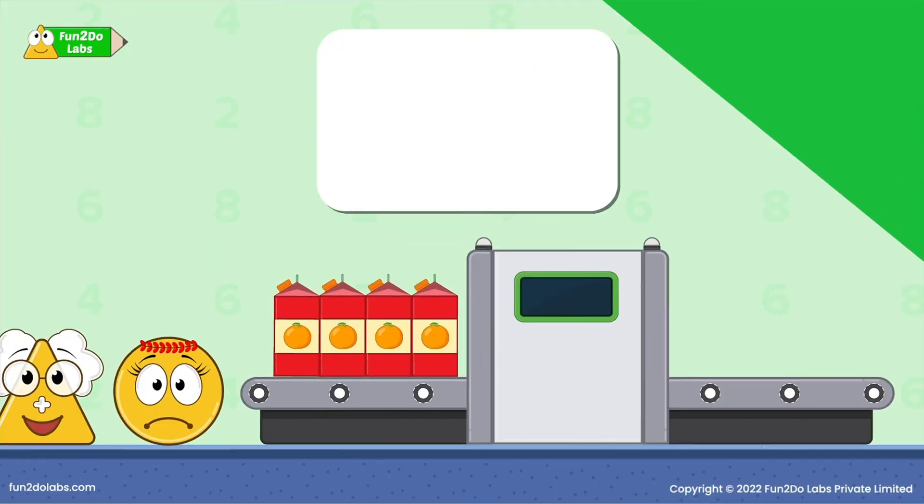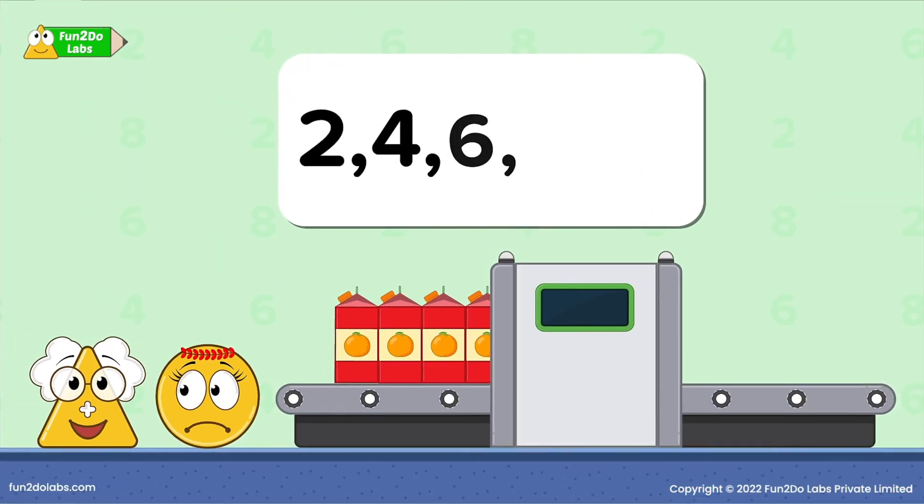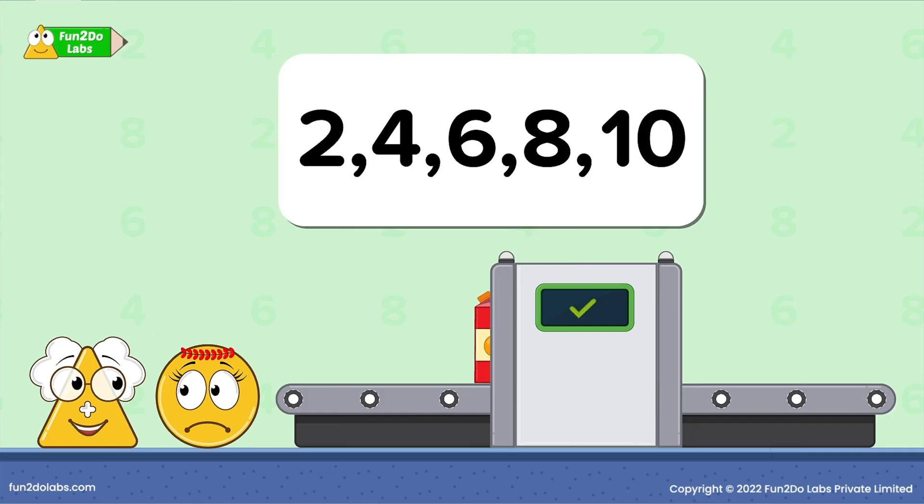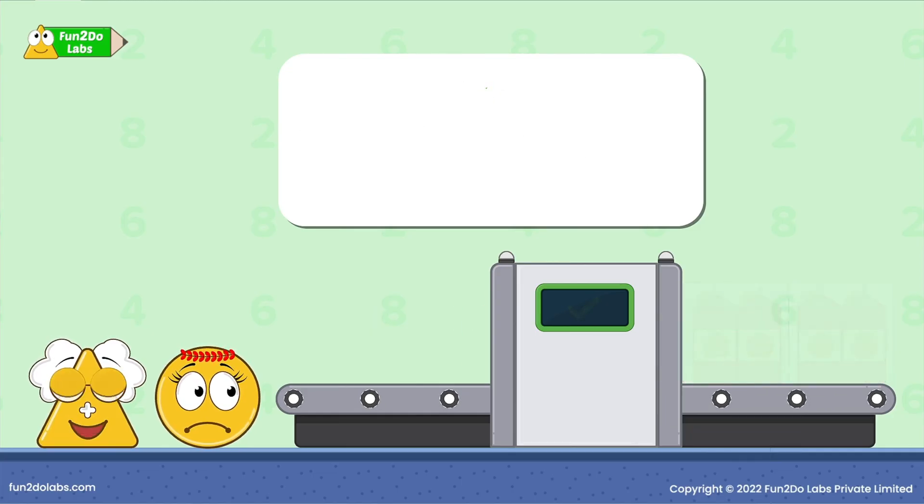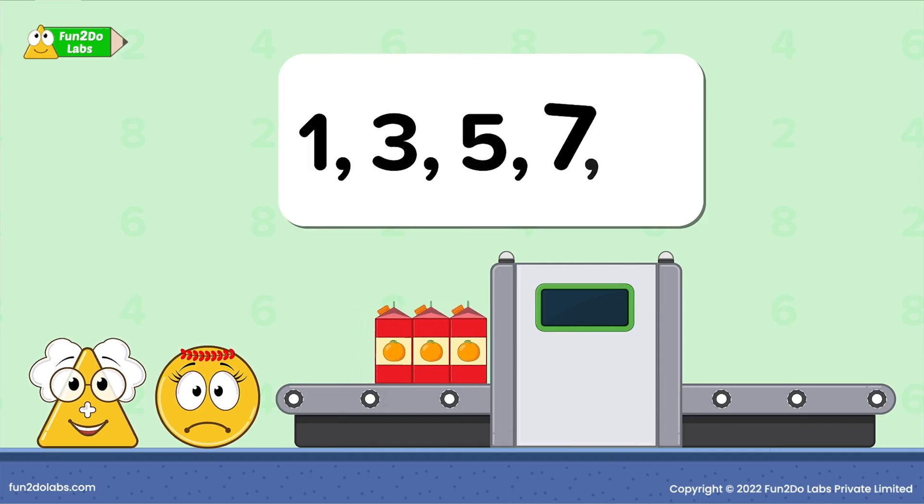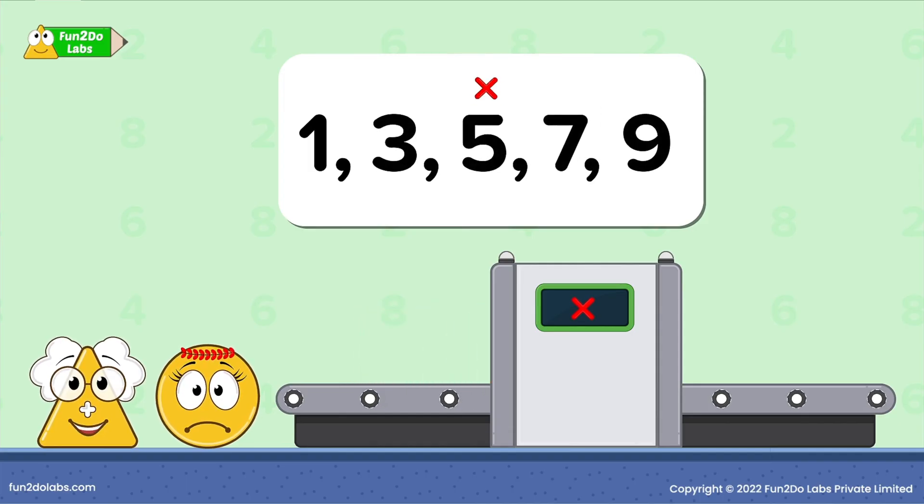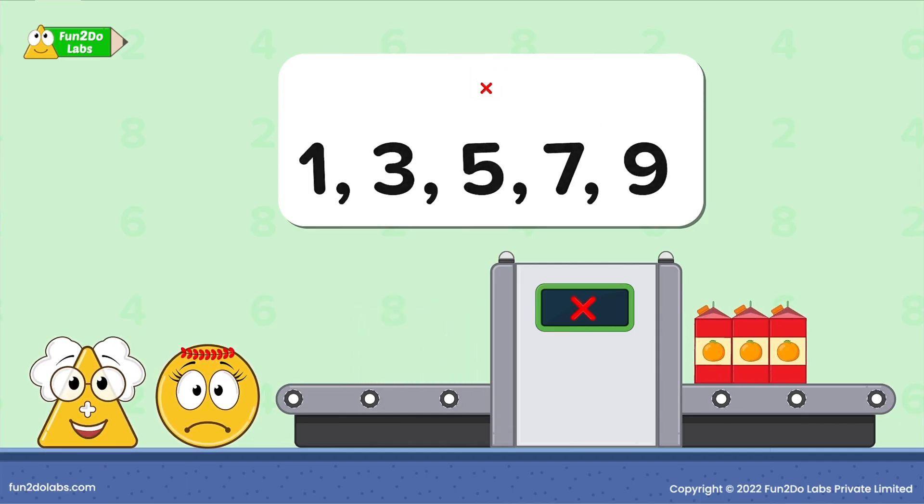Thus, if we put two, four, six, eight and ten packets in Mr. Perfect Pear, it will pack. If you put one, three, five, seven and nine packets, it won't pack. Siro, can you explain why?